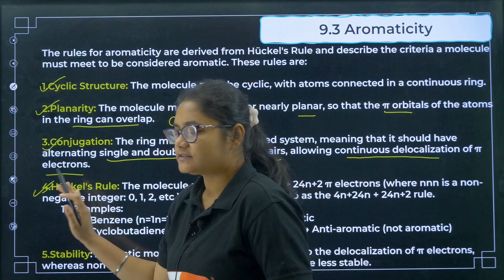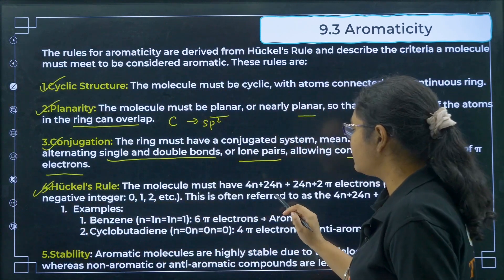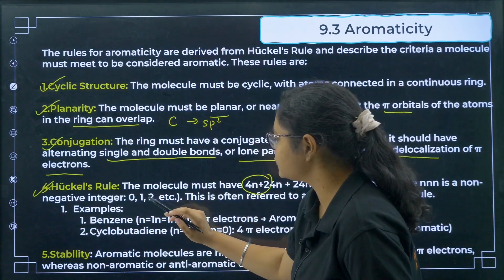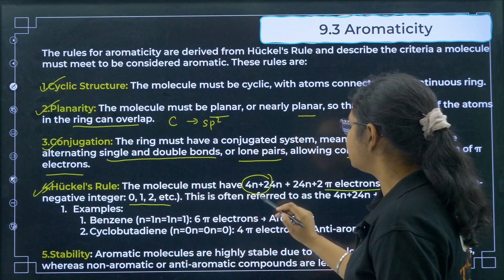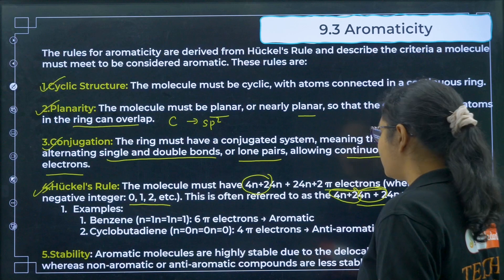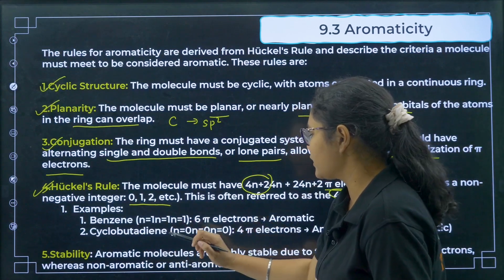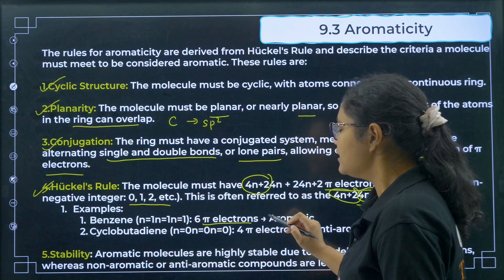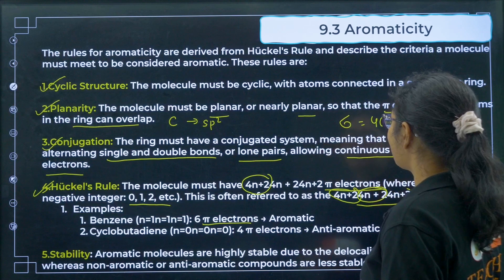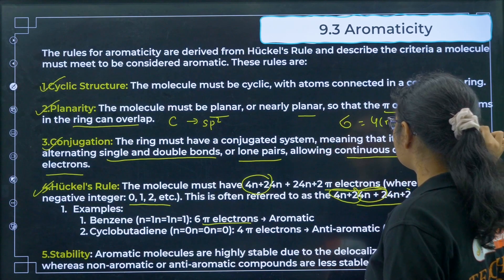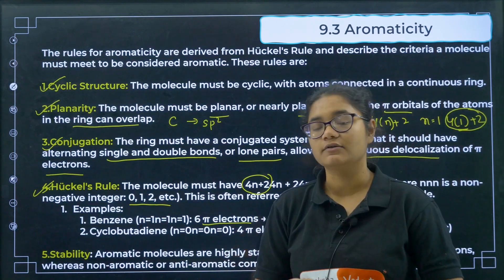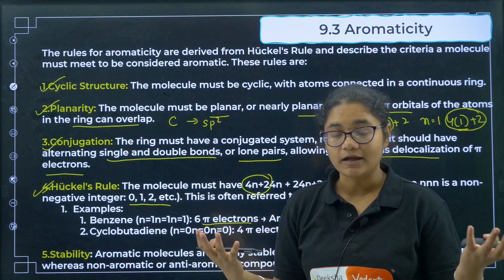The fourth and most important condition is Hückel's rule: the molecule must have 4n + 2 pi electrons, where n is a non-negative integer. This is referred to as the 4n + 2 rule. For benzene, there are 6 pi electrons. Setting n = 1 gives 4(1) + 2 = 6. Since 6 pi electrons can be written as 4n + 2, benzene satisfies Hückel's rule and is an aromatic compound.